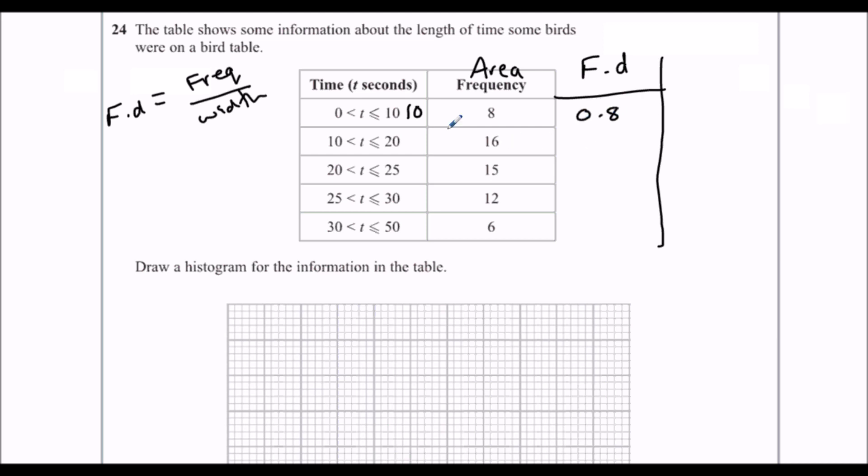16 divided by 10. 15 divided by 5. 12 divided by 5. So 12 divided by 5 is 2.4. And 6 divided by 20, that's 0.3.